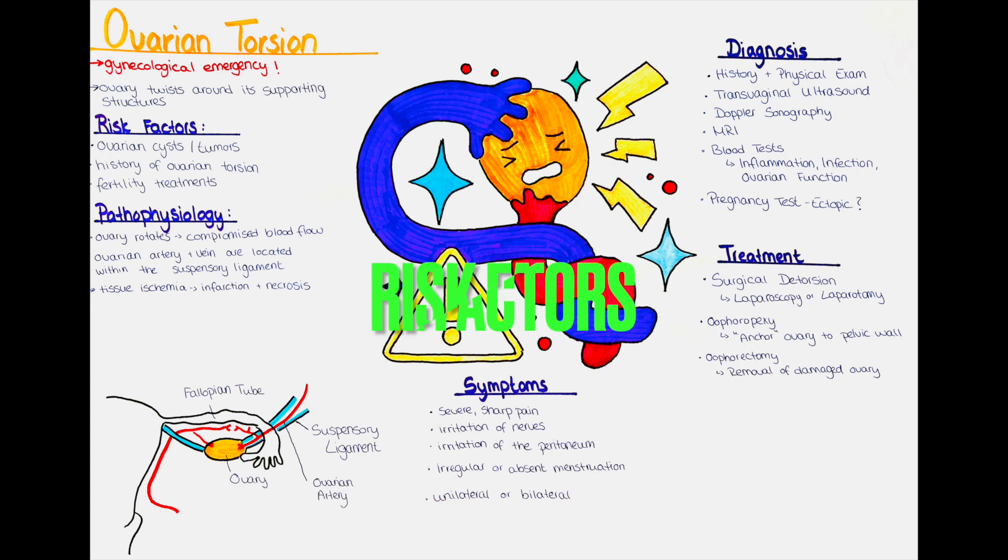What are risk factors for ovarian torsion? The presence of ovarian cysts, particularly larger cysts, increases the risk of ovarian torsion. Also the presence of ovarian masses or tumors can increase the risk of torsion. They have in common that they basically bring the ovary out of balance leading it to flip over.